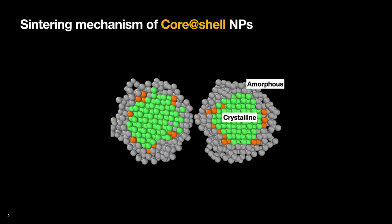Sintering mechanisms of pure crystalline metal nanoparticles had been investigated previously, but there was no study on particles that have a crystalline metal core with an amorphous metal oxide shell. Because this metal–metal oxide core-shell system is gathering much attention as a functional nanoparticle, we studied their sintering behavior by using molecular dynamics.